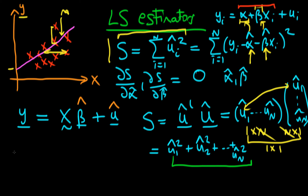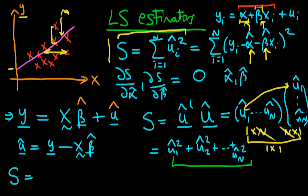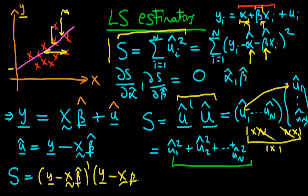That's straightforward: from the matrix model we can rearrange to get û = y − Xβ̂. Substituting this into our sum of squared residuals gives (y − Xβ̂)'(y − Xβ̂), where the first term is the transposed residual vector and the second term is the residual vector itself. The idea is that we're choosing β̂ to minimize this product. In the next video we'll continue with this derivation of the least squares estimators in matrix form.